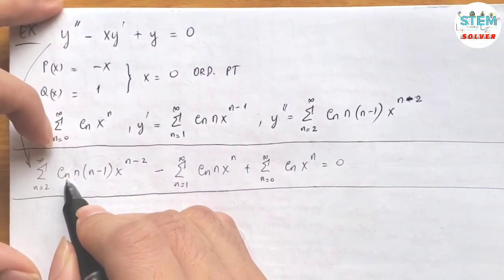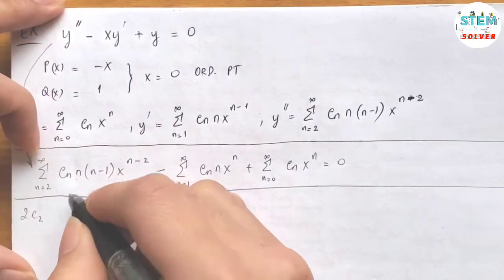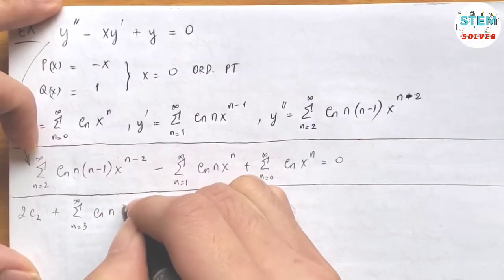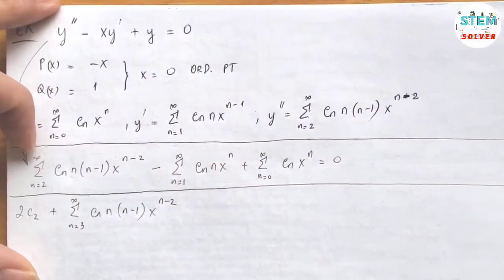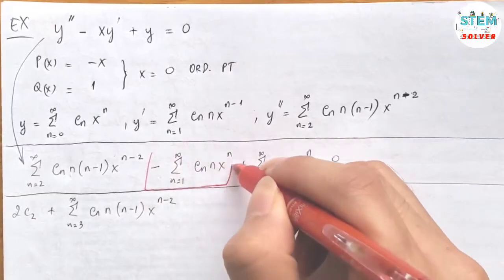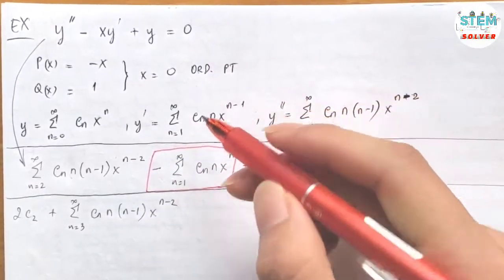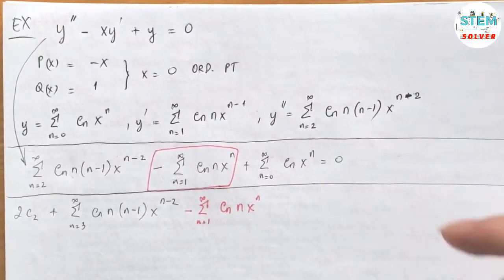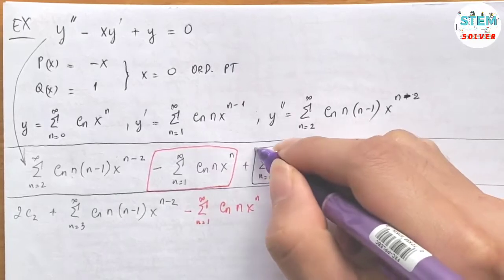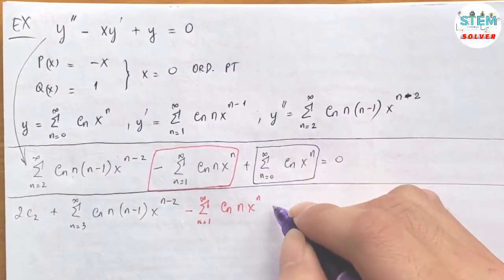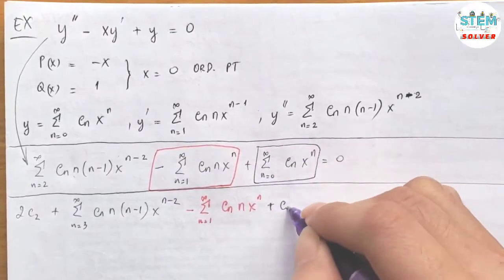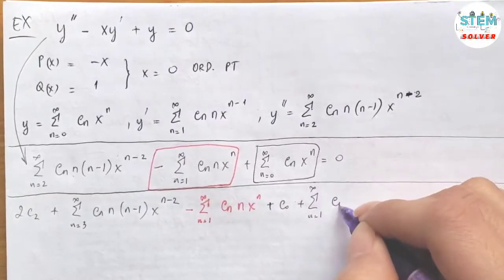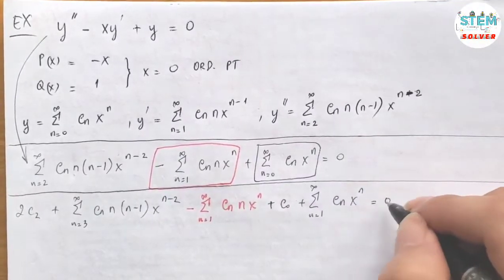So plug in 2, I have 2c2 plus power series from 3 to infinity cn n times n minus 1 x to the n minus 2. For the second one, we are going to rewrite this. So I'm going to have power series from 1 to infinity cn n x to the n. And for the last one, we are going to run out terms for it. So we have c0 plus power series from 1 to infinity cn x to the n is equal to zero.